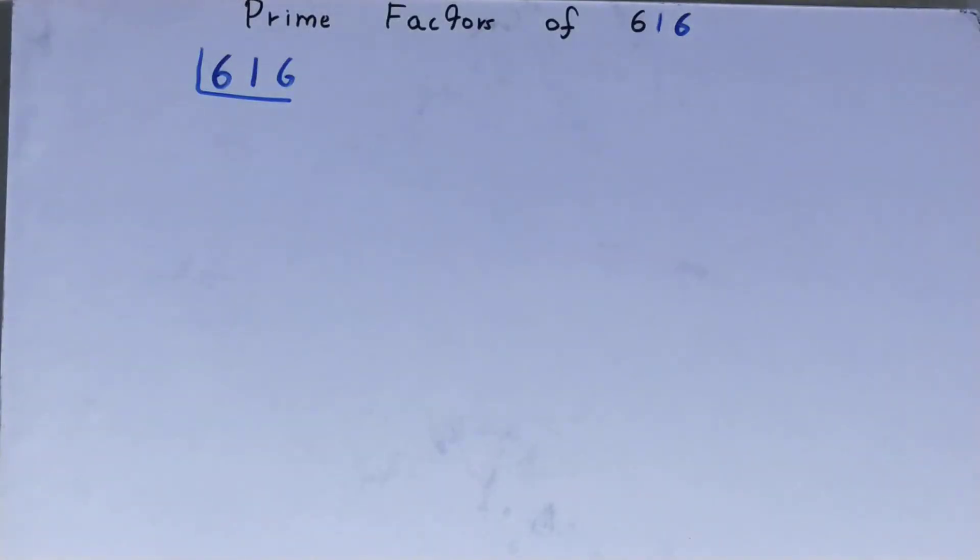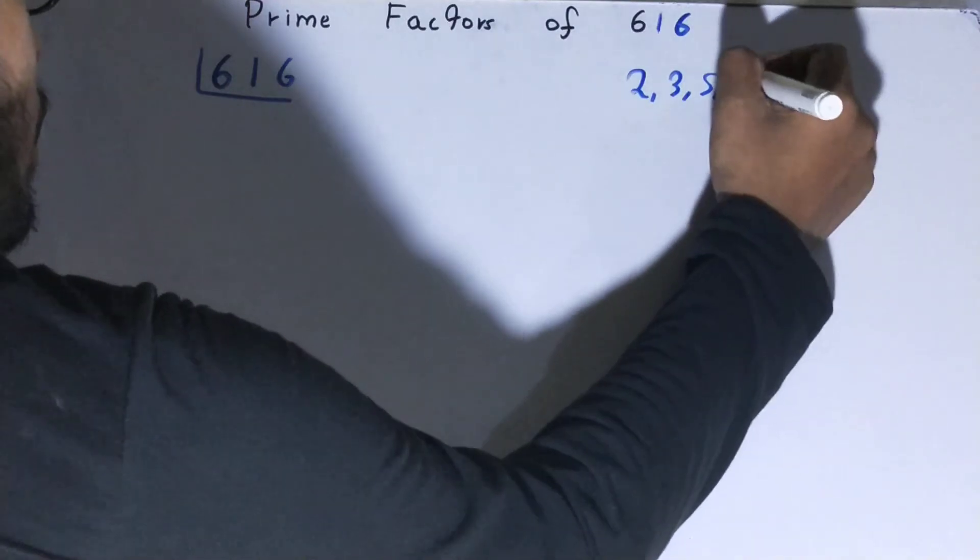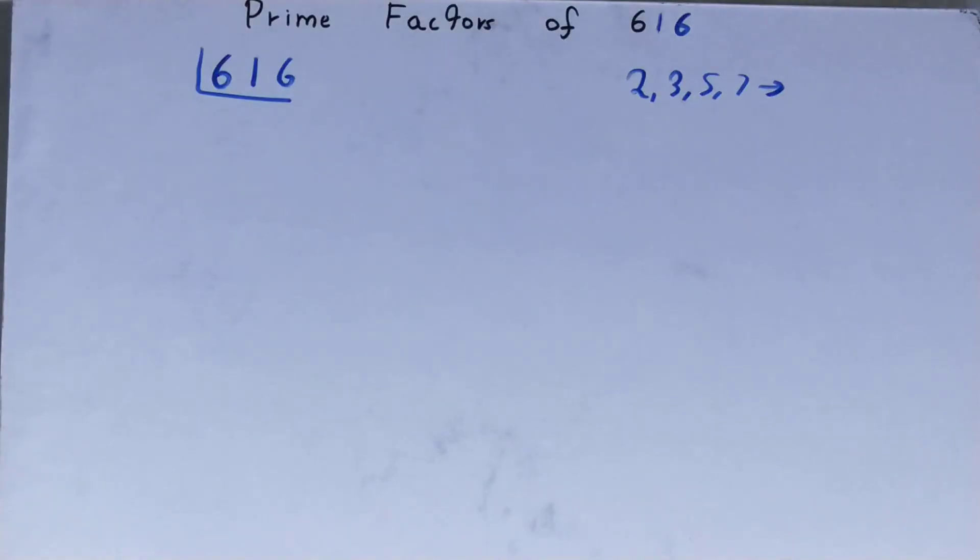Before solving this any further, you must have an idea about what prime numbers are. Prime numbers are numbers that are divisible by 1 and the number itself, like 2, 3, 5, 7, and so on.